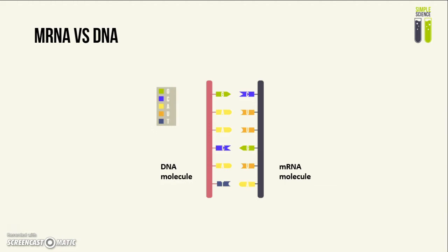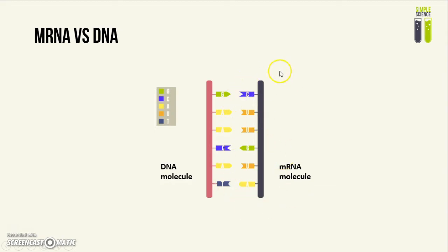mRNA molecules are different compared to DNA molecules in several ways. First of all, you will notice that an mRNA molecule has the base uracil instead of thymine. Also, although not demonstrated here, DNA molecules often occur in double strands, whereas mRNA molecules often occur in single strands.